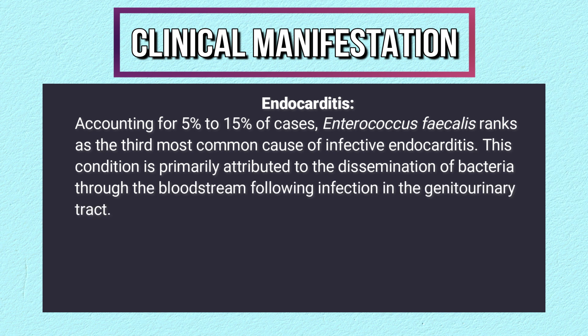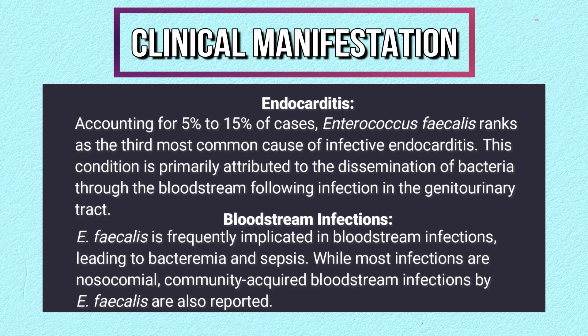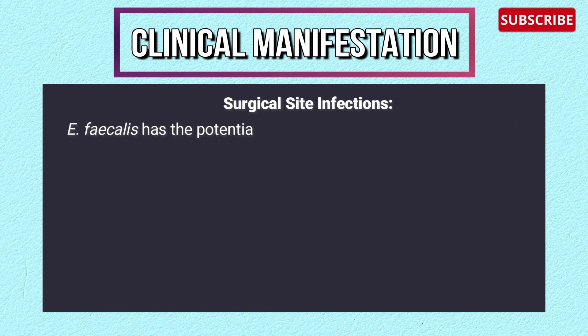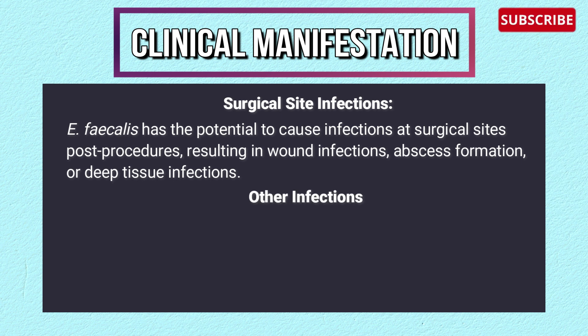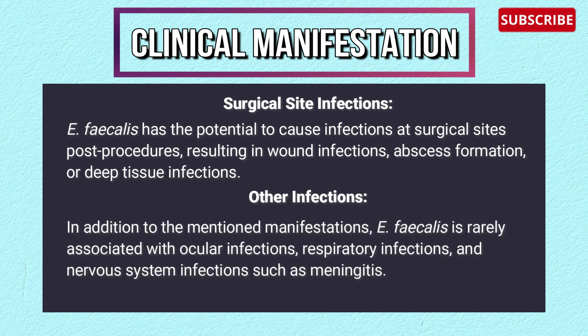Enterococcus faecalis ranks as the third most common cause of infective endocarditis, accounting for 5–15% of cases, primarily from bacterial dissemination through the bloodstream following genitourinary tract infection. It is also frequently implicated in bloodstream infections leading to bacteremia and sepsis, and can cause surgical site infections resulting in wound infections, abscess formation, or deep tissue infections. Rarely, it is associated with ocular, respiratory, and nervous system infections such as meningitis.